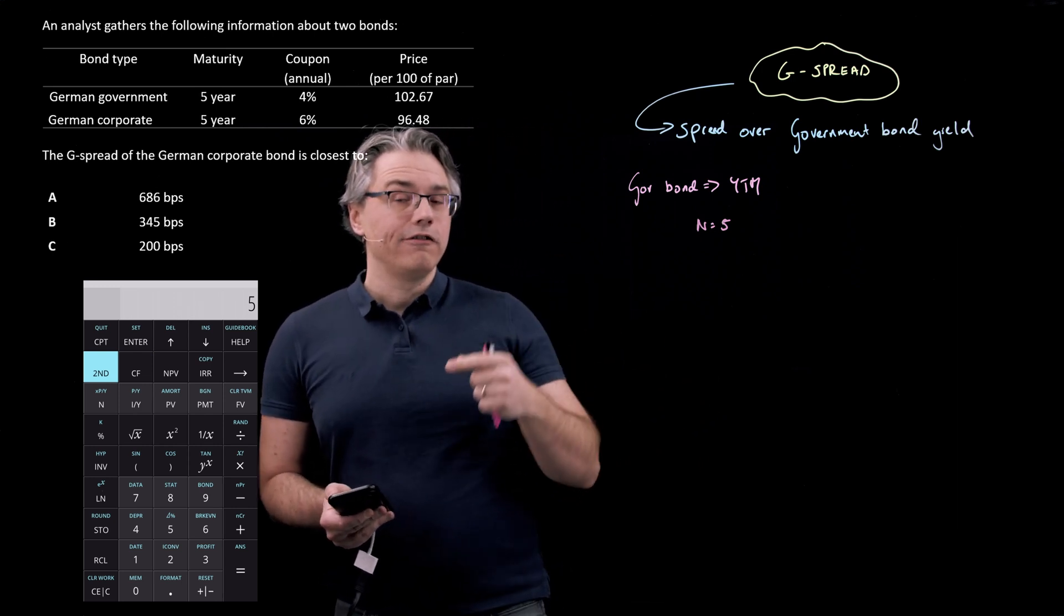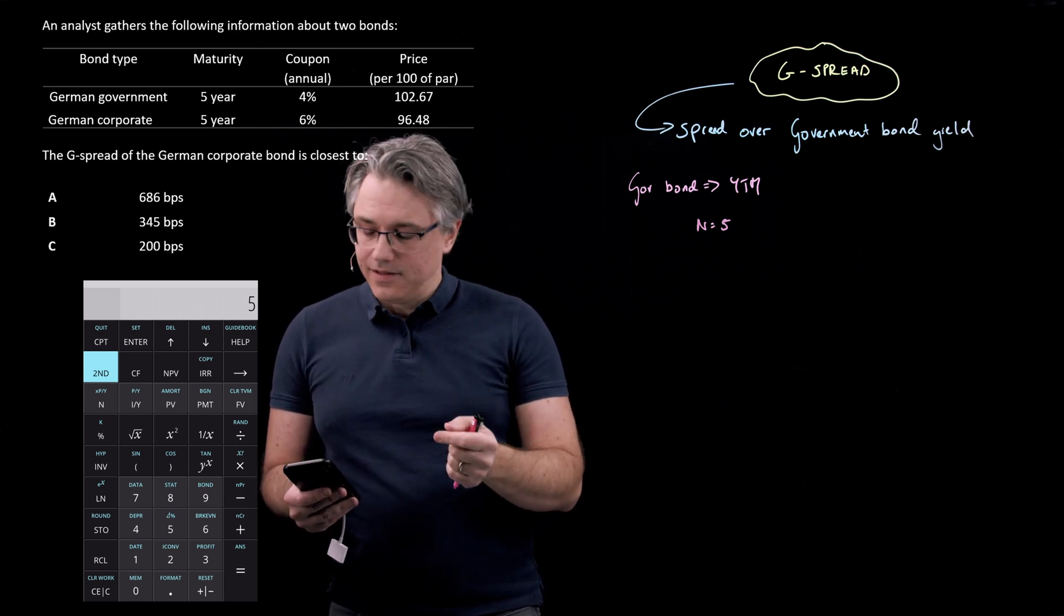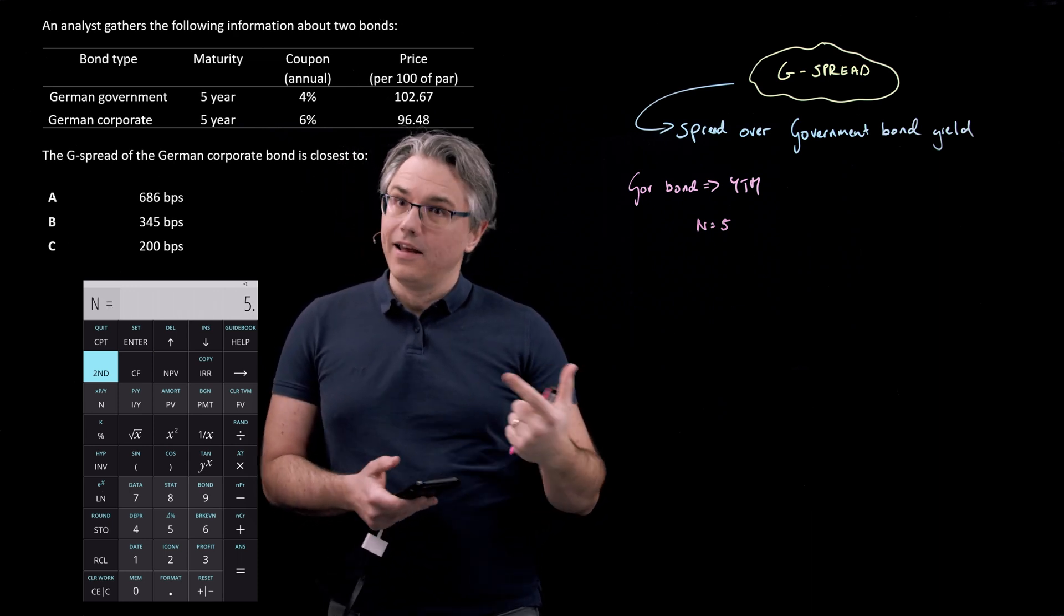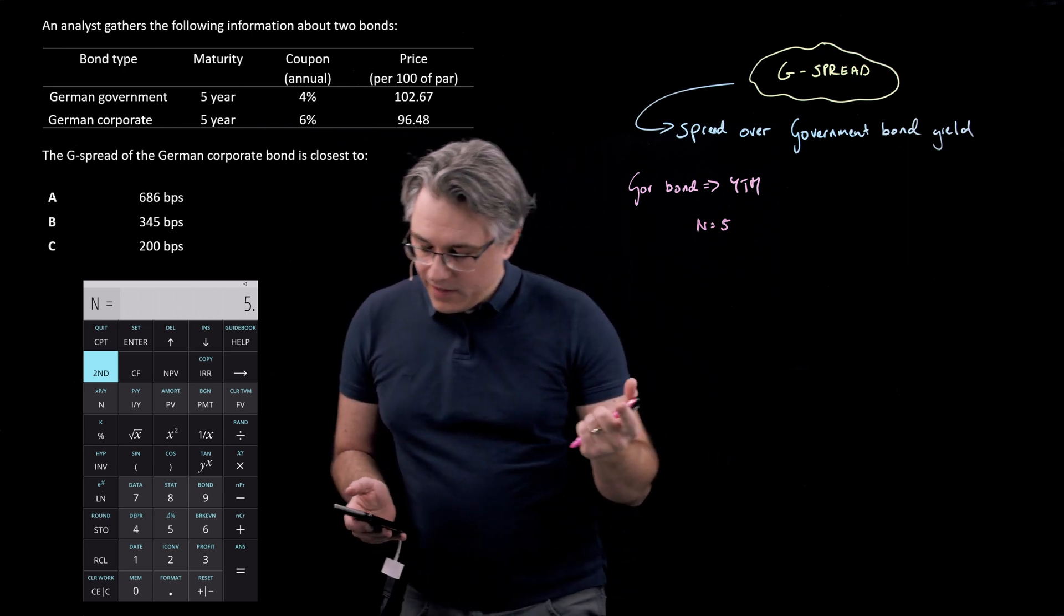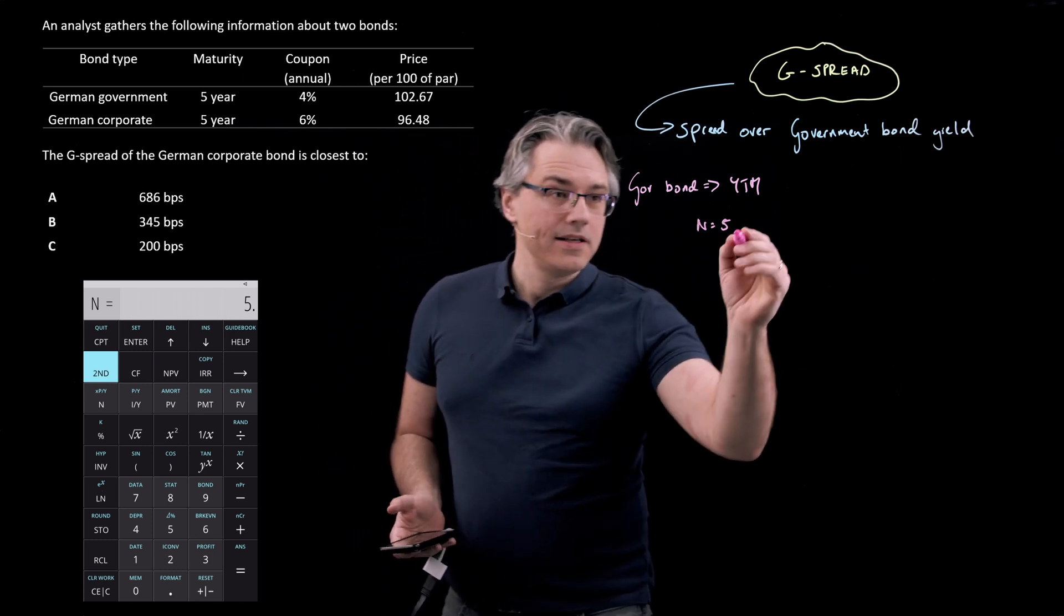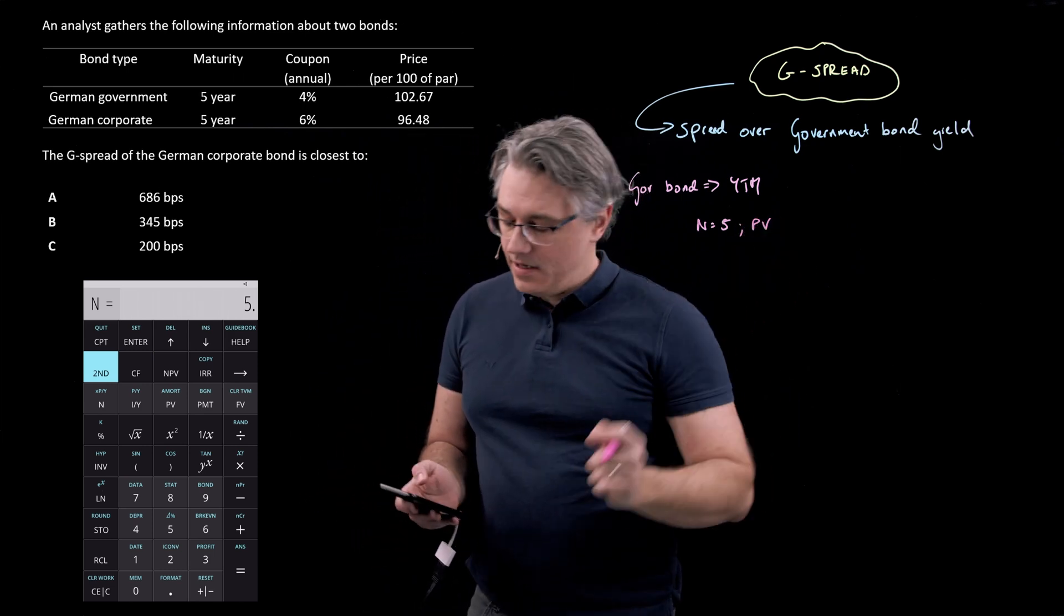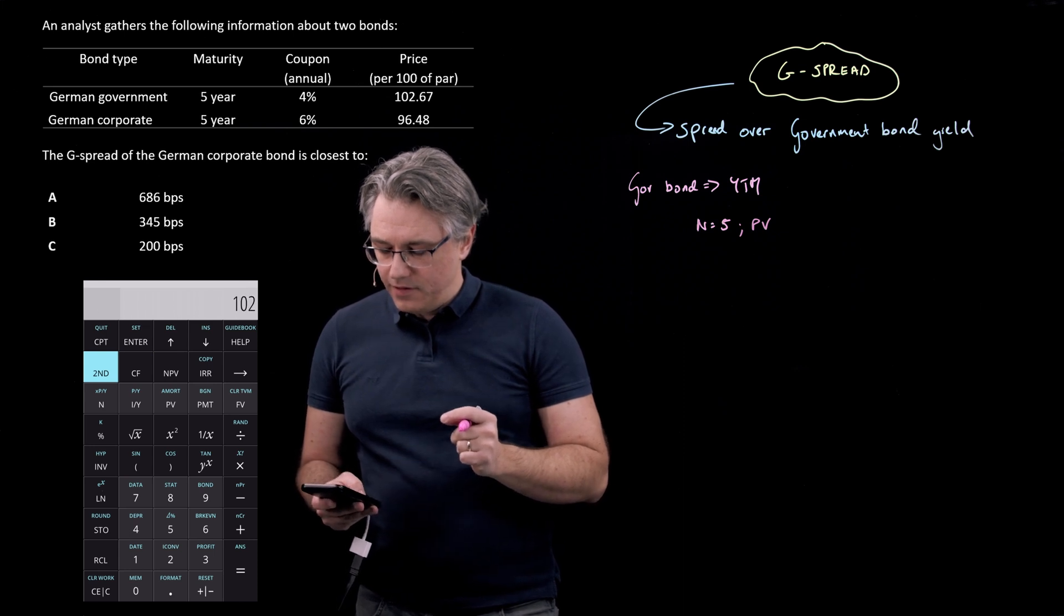you actually first input the value. So in this case, it's going to be five. And you follow this up with the relevant key, such as N in this case, to tell the calculator that N should be equal to five. Now, the next thing I want to do is tell the calculator what the price of the bond is, and that's going to be the PV,